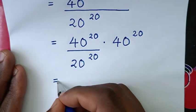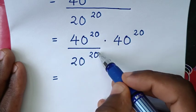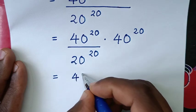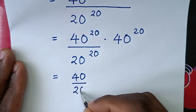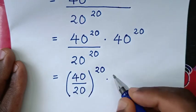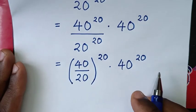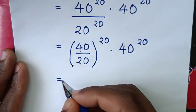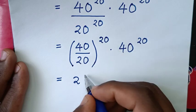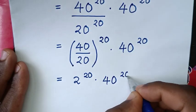Now we apply the division of exponents rule: different bases but the same power of 20. So we write (40 over 20) raised to the power of 20, then multiply by the remaining 40 power of 20. Since 40 divided by 20 is 2, this gives us 2 power of 20, times 40 power of 20.